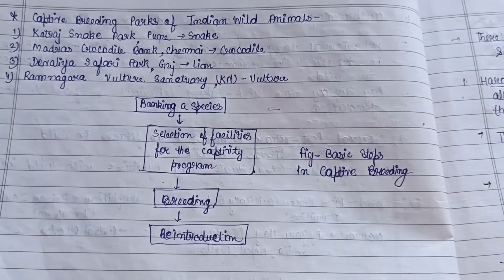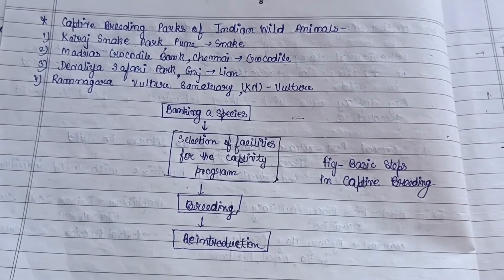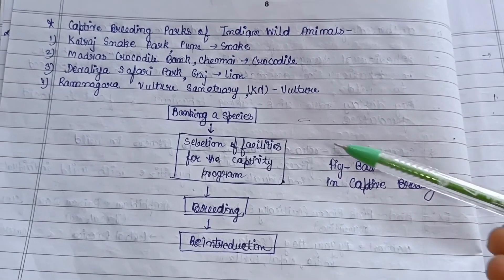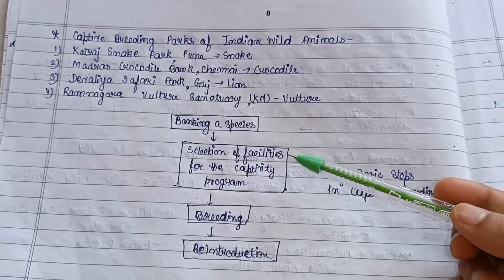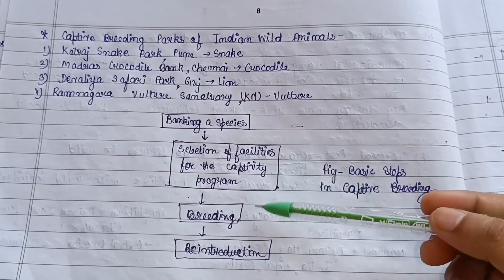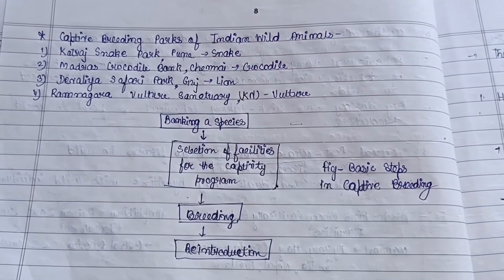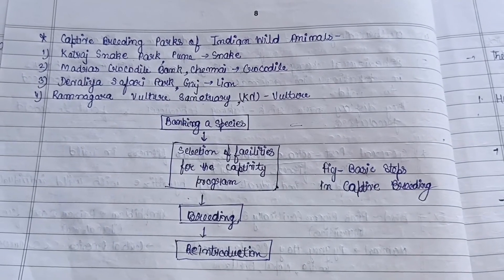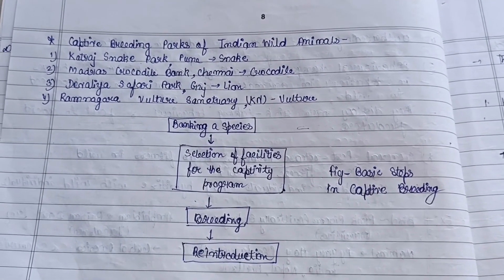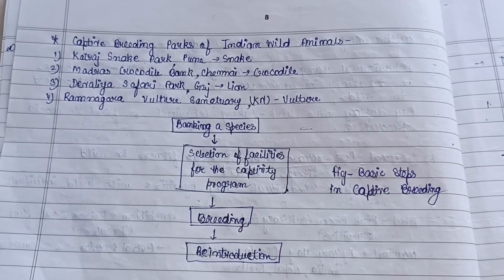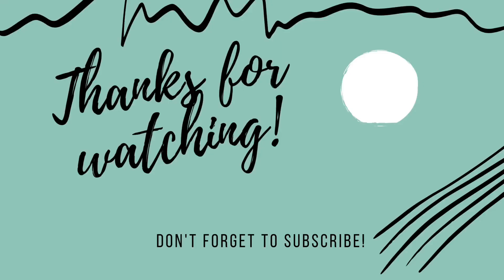The basic steps in captive breeding shown in the diagram are: banking species, selection of facilities for the captivity program, breeding, and then reintroduction. That covers the topic of captive breeding — hope you like the video, and if you do, please subscribe to the channel.